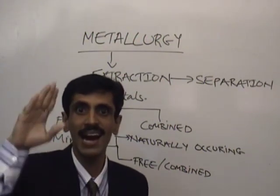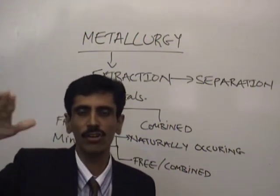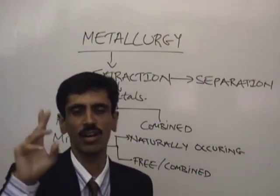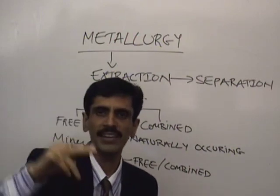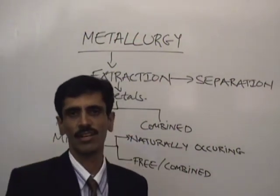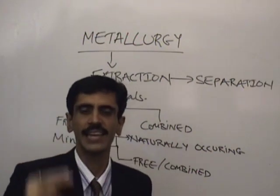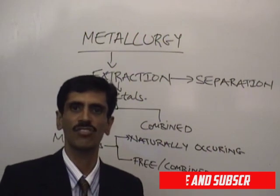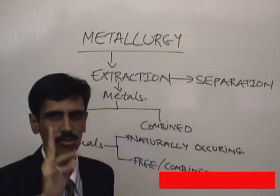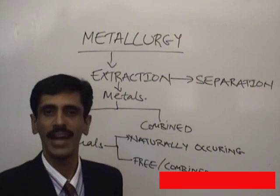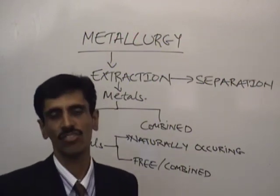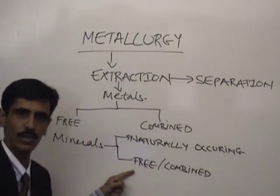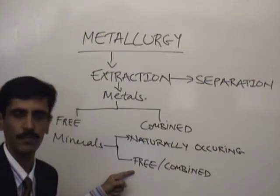Metals, being denser and having a higher density, obviously settle down, and therefore we say that metals are present in the earth's crust. The atmosphere is at a higher level, so we talk about gases, because gases are lighter and they rise above. Therefore, since we are talking about metals, our prime interest of natural occurrence is obviously the earth's crust. The second criteria is that the metal must be either in the free state or the combined state.